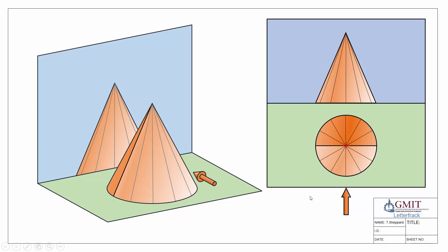We'll start by picking a point on our extreme generator. As we've seen already, our extreme generator is a line perpendicular to our viewing direction going through the center of our cone as seen in plan view. Here we can see our point on our extreme generator in plan view, and that point is on our extreme generator in the 3D view. Because it's on the extreme generator in plan view, when we project it into our elevation it's going to be projected onto the outline.